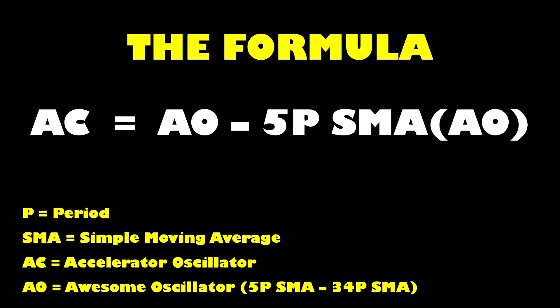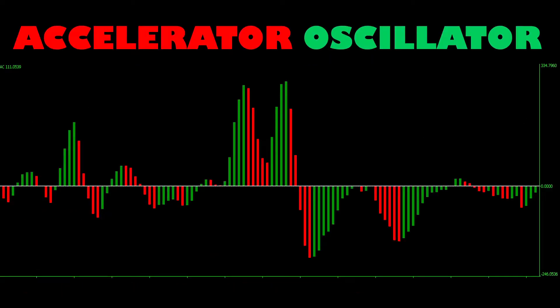To calculate it, you will first have to compute the reading for the Awesome Oscillator — we have done a video on that, which will be linked in the description. It's calculated by taking a 5-period moving average and subtracting from it a 34-period moving average: a fast average minus a slow one. The Accelerator Oscillator then takes that Awesome Oscillator value and subtracts from it a 5-period simple moving average of the Awesome Oscillator. The difference between the two is then printed as the histogram, complete with zero line crossover and all.